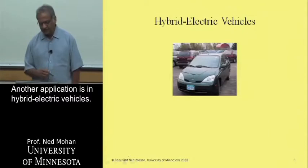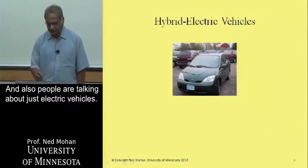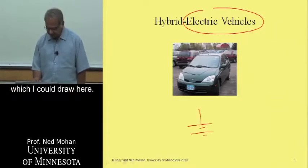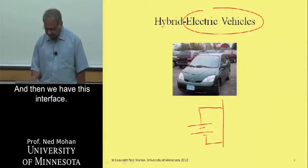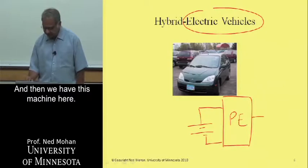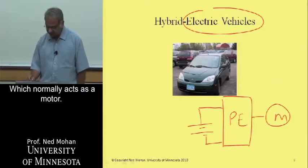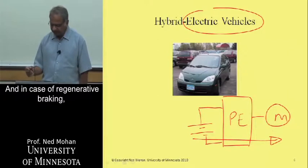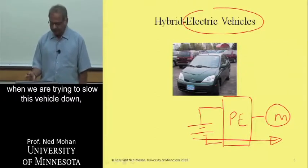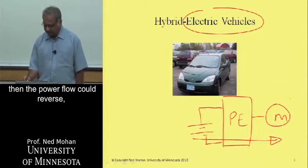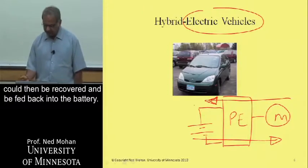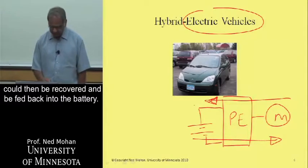Another application is in hybrid electric vehicles, and also electric vehicles. There is a battery, and then we have this interface and a machine which normally acts as a motor, with power flowing from the battery to the motor. In the case of regenerative braking, when we are trying to slow the vehicle down, the power flow could reverse, and the energy associated with the inertia of the system could be recovered and fed back into the battery.